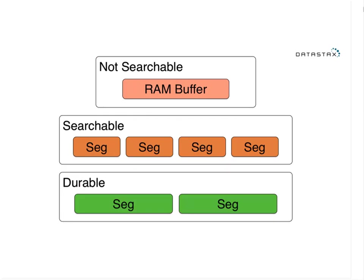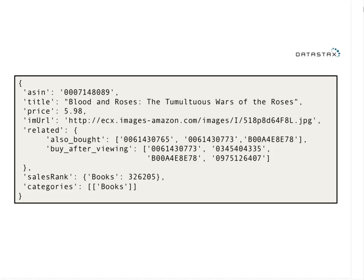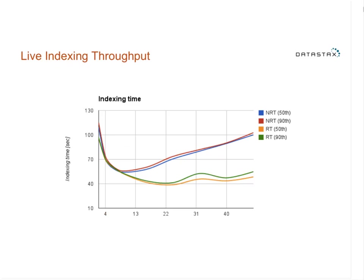In DSE 4.7, we've more than doubled indexing throughput, and the delay between something being inserted into the RAM buffer and becoming visible to search is very short. The graph shows indexing time versus core count — with near-real-time (stock Lucene), indexing time goes up with concurrency, while with real-time indexing it stays low and roughly half that of traditional Lucene search.